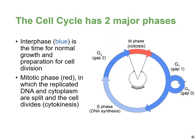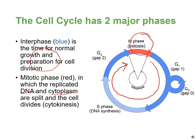The same thing is shown here, except it's a little easier to see all of the steps of interphase — normal growth and preparation for cell division — and then mitosis. In some books, mitosis includes both the division of the DNA and the cytoplasm, which is cytokinesis, and in others, cytokinesis is separated out as its own segment of the cell cycle.